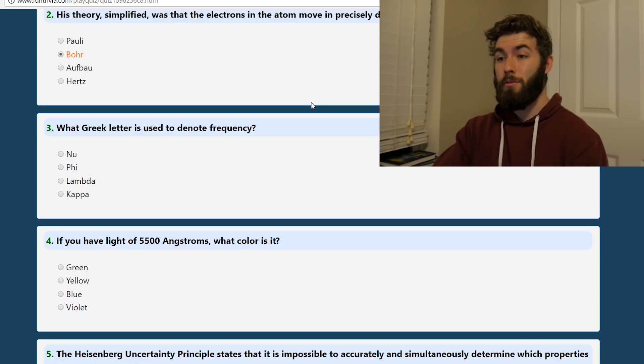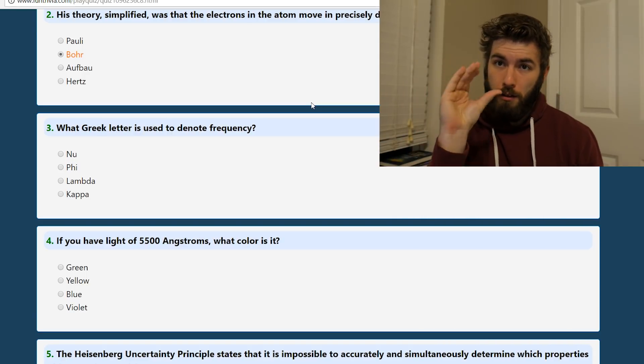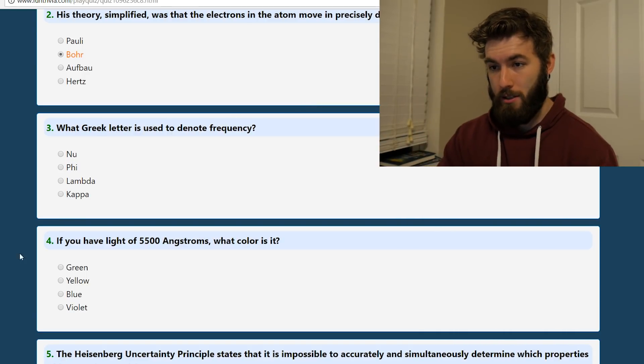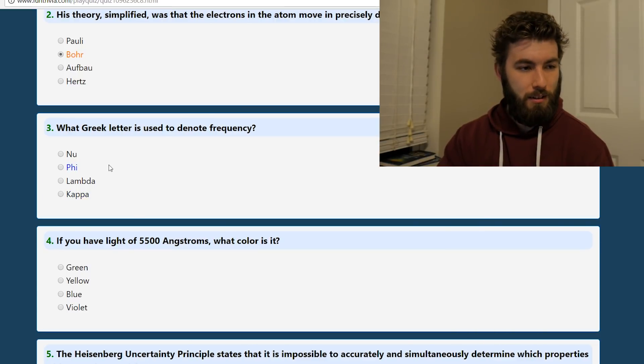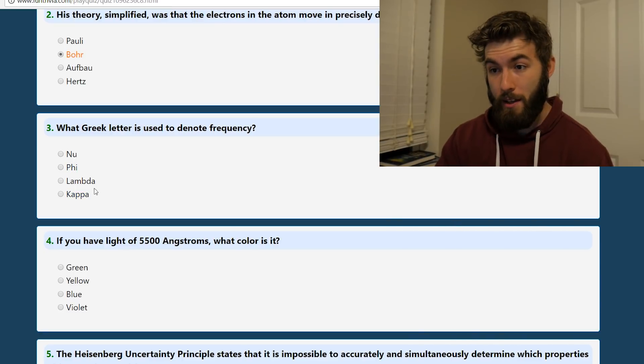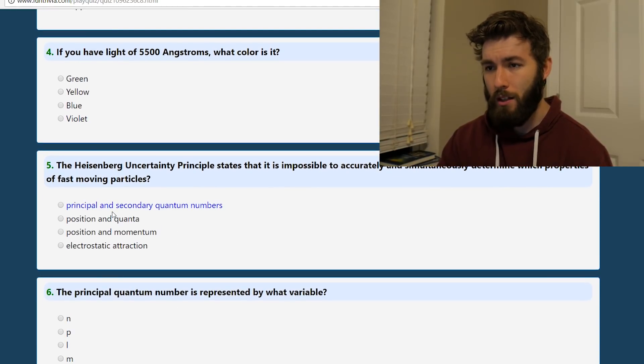What Greek letter is used to denote frequency? It's the little v. So it's not phi. What is it called? The v. Kappa. It's not, it's a process of elimination. It's not kappa. It's not lambda. It's nu. Oh, that's what that's called. Oh, God.